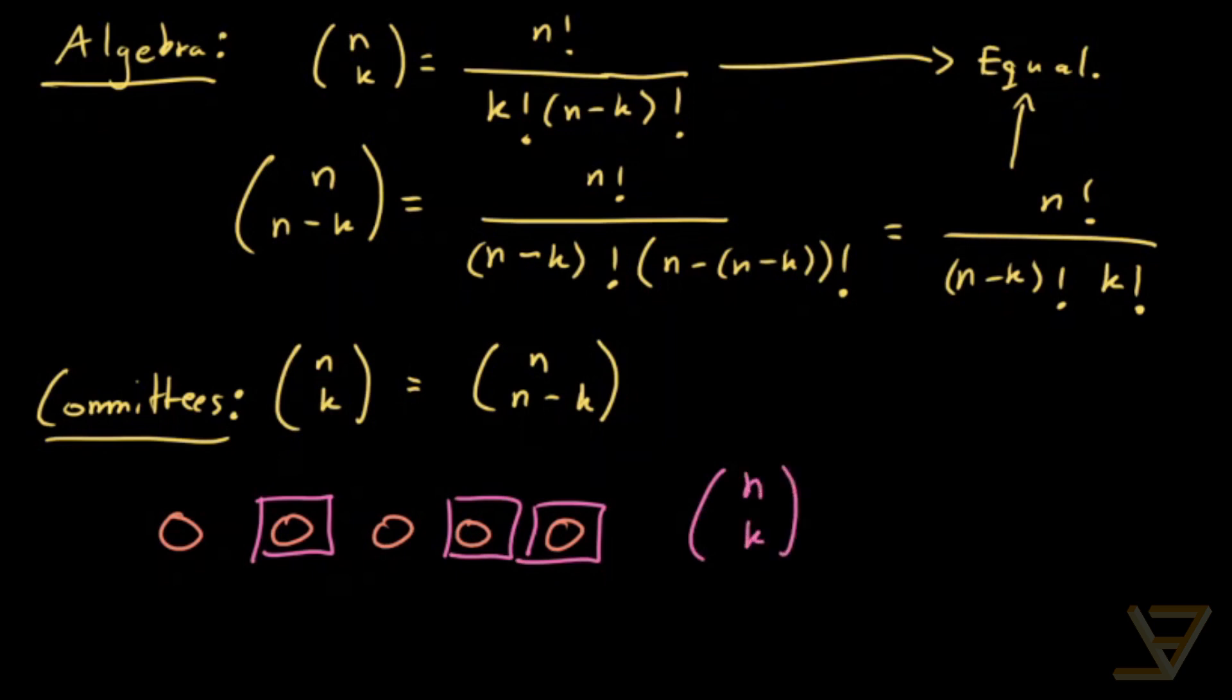But notice that picking these three is exactly the same as excluding two of them. So that tells us that this, the exact same choice function is given by n choose n minus k.